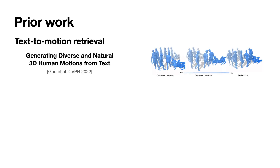Previous work has only treated text-to-motion retrieval as a proxy evaluation metric. Guo et al. train a common embedding space between the two modalities with a contrastive margin loss. The main limitation of this work is its slow performance, in particular when the gallery contains fine-grained descriptions.